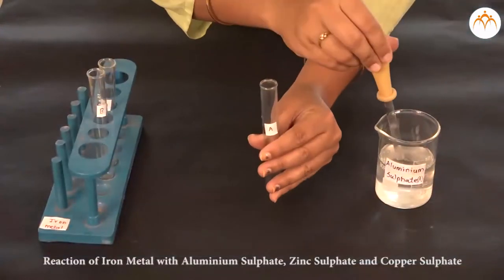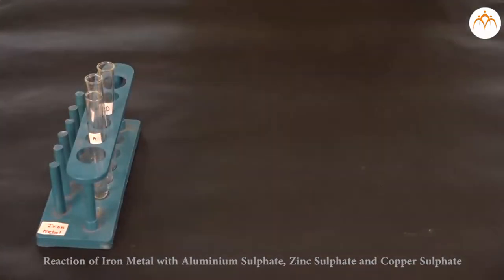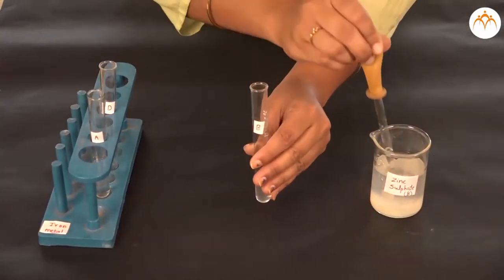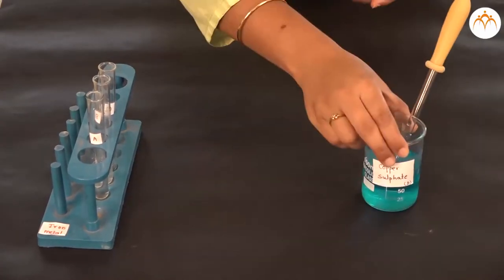Take copper filings and add to aluminum sulfate, zinc sulfate and ferrous sulfate solutions. Observe the changes.